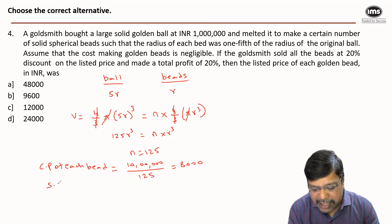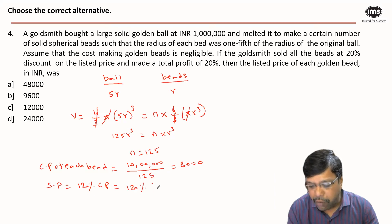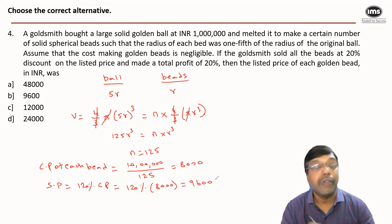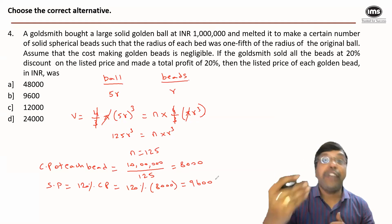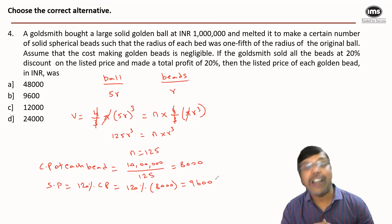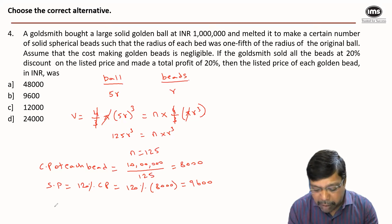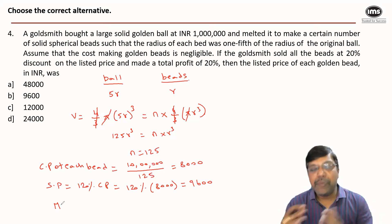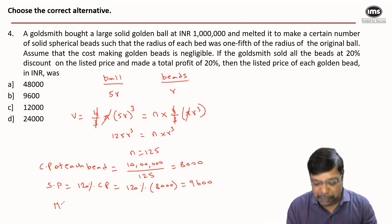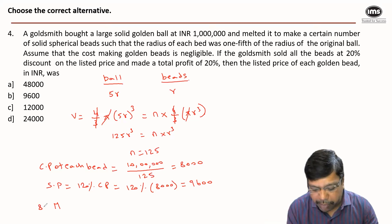Since there was a profit of 20%, the selling price is equal to 120% of the cost price, which is 120% of 8000 — giving 9600. But the bead was sold for 9600 after giving a discount of 20%. So if the market price is m, a 20% discount means selling at 80% of the market price.